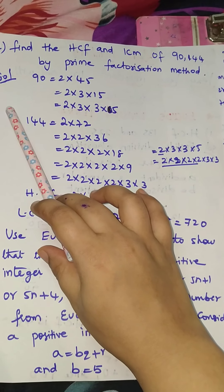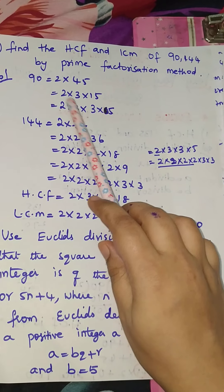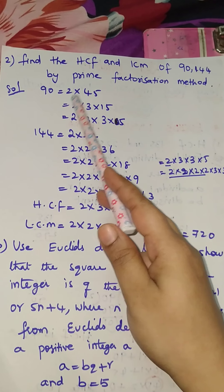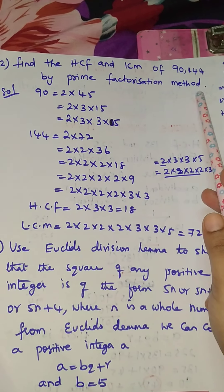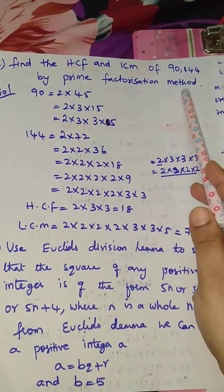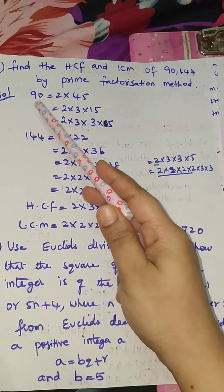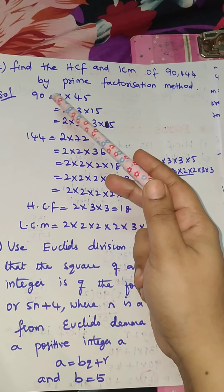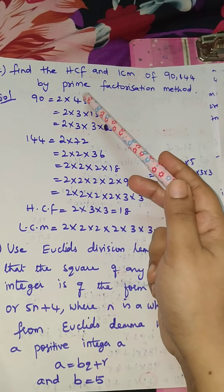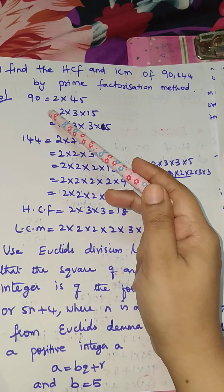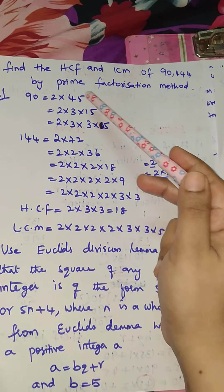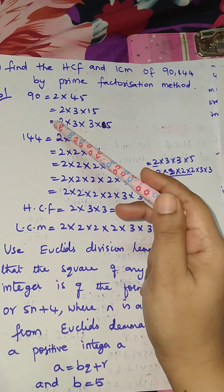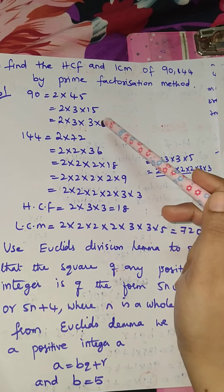Second question: find the HCF and LCM of 90 and 144 by prime factorization method. Prime factorization method means you have to expand these as products. 90 is equal to 2 into 45, and 45 is 3 into 15, so 90 equals 2 into 3 into 3 into 5.